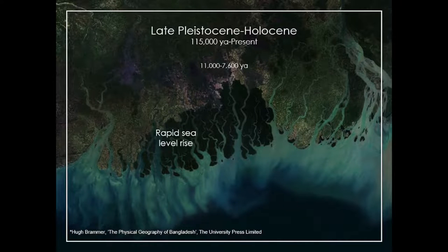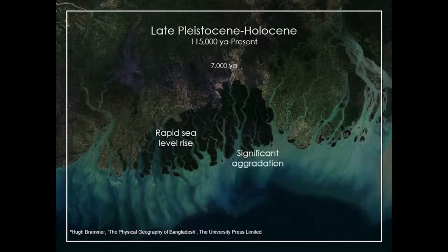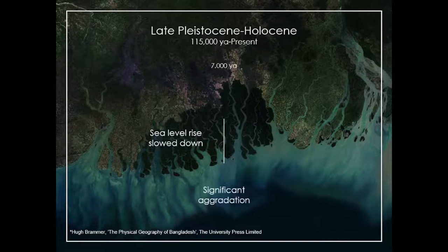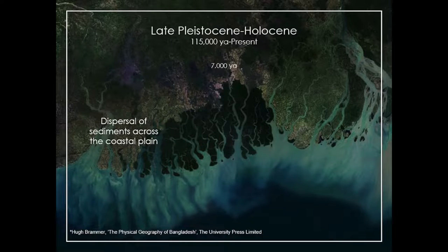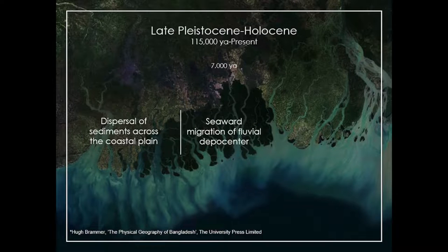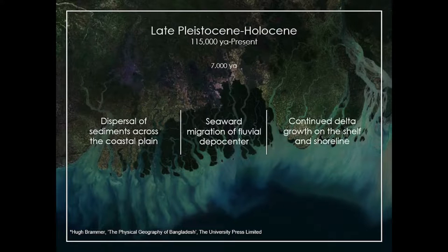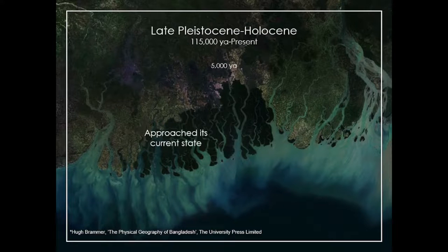The sediments then filled up the incised valleys and deposited over the low coastal lateritic uplands. Rapid sea level rise continued and major aggradation took place until 7,600 years ago. 7,000 years ago, the rate of sea level rise slowed down and maximum transgression was reached. The delta changed from an aggradational to a progradational system. At that time, widespread dispersal of sediments across the coastal plain took place. The fluvial depocenter migrated seaward, and the delta growth continued on the shelf and shoreline. The Bengal delta approached the current state about 5,000 years ago and started prograding seaward.